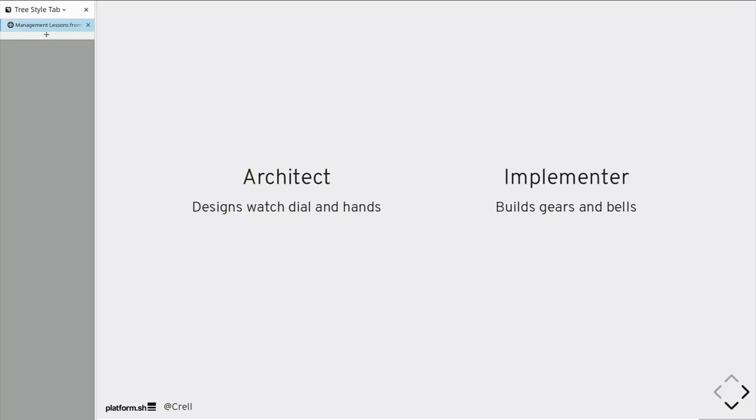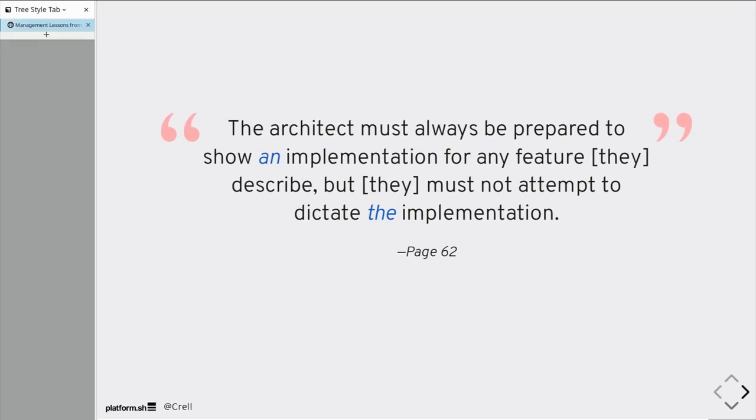The architecture needs to support multiple implementations of that same concept. It also means the architect must always be prepared to show an implementation but not dictate the implementation. The architect needs to demonstrate I'm not asking you to do something impossible. But once he's demonstrated it's possible, then it's not their job to say this is the way you must do it. This requires constant, ongoing, collaborative effort with a high degree of communication. So you still have your whole team involved. But at the end of the day, there is a person whose job it is to say, we're going to do it this way.